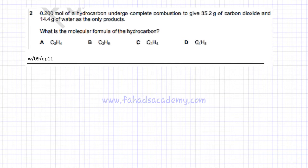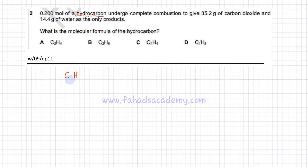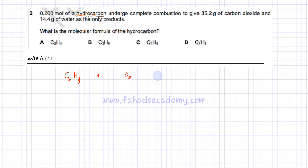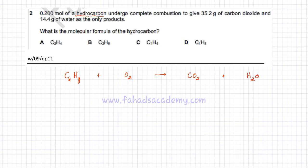Complete combustion is undergone — there's a hydrocarbon being burned. A hydrocarbon contains carbon and hydrogen. We're not sure how many carbons it has, so let's call that CX with X carbons and Y hydrogens. We burn it completely with O2, producing two things: carbon dioxide CO2 and water H2O.